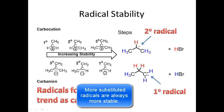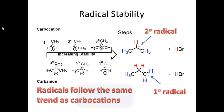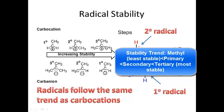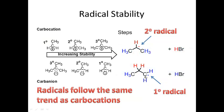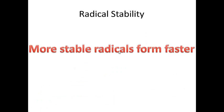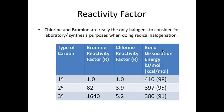Radical stability matches carbocation stability: a methyl radical is least stable, primary is less stable than secondary, and tertiary is the most stable. So a primary radical is going to be less stable than the secondary radical we have here. Because of that decreased stability, it's harder to break the C-H bond in propagation, so the secondary radical forms much faster. More stable radicals form faster — stability goes methyl, primary, secondary, tertiary.